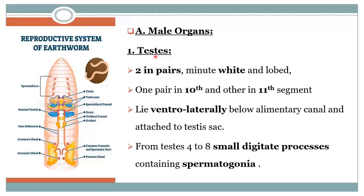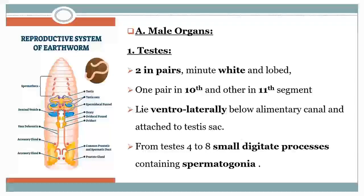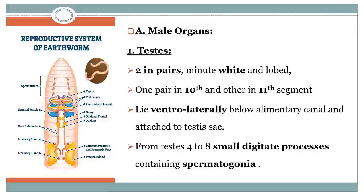First of all, we will see about the testes. The testes of the earthworm are white lobules and which are present in a pair. They consist of two pairs in the 10th and 11th segments. They are present ventrolaterally and below the alimentary canal on either side of the nerve cord in a testes sac. In these testes, there is a finger-like projection that consists of round-shaped cells called spermatogonia.